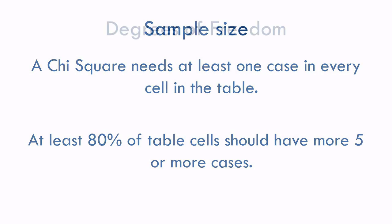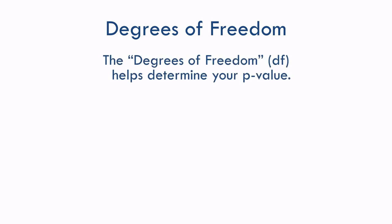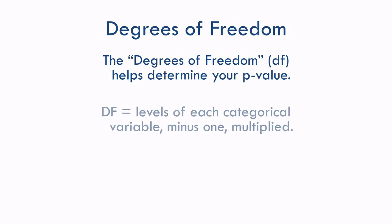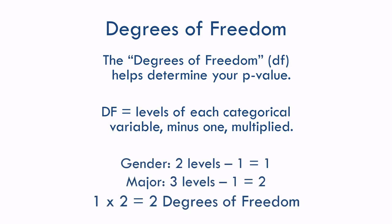There's one more value we need to talk about — that's degrees of freedom. This helps determine the exact p-value for the chi-square value. If you're doing chi-squares by hand, you'd look this up in a table. Finding the df, or degrees of freedom, is really easy. We just take the levels of each variable, subtract 1, and multiply. Unlike with some other tests, the sample size doesn't matter with our degrees of freedom — it's just the number of levels. So in our example, gender has two levels, subtract 1 to get 1. Major has three levels, subtract 1 to get 2. 1 times 2 is 2, so we have 2 degrees of freedom.